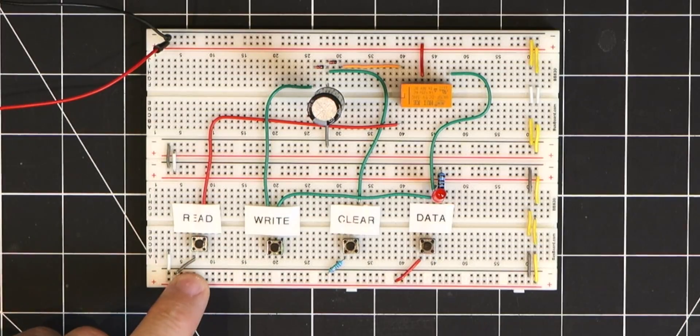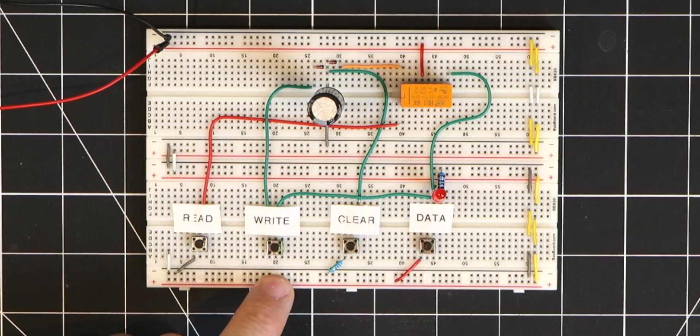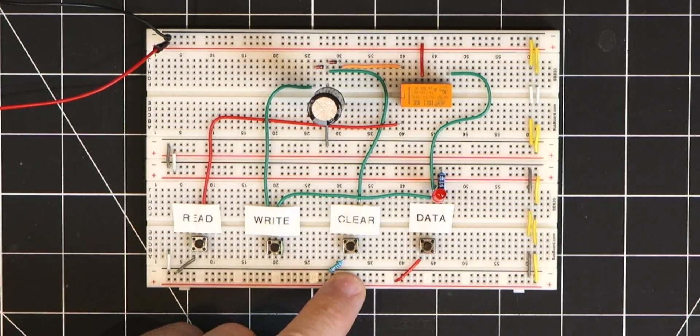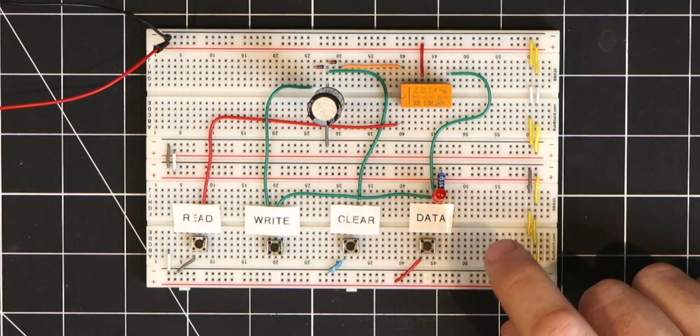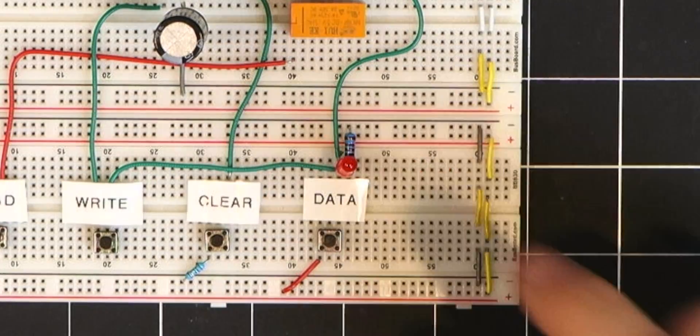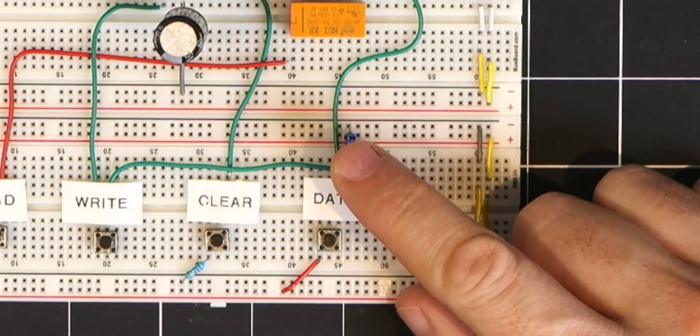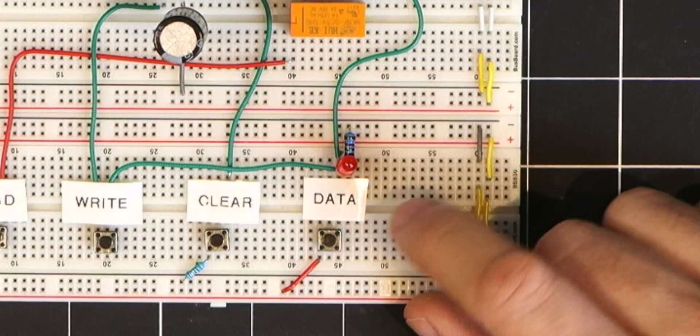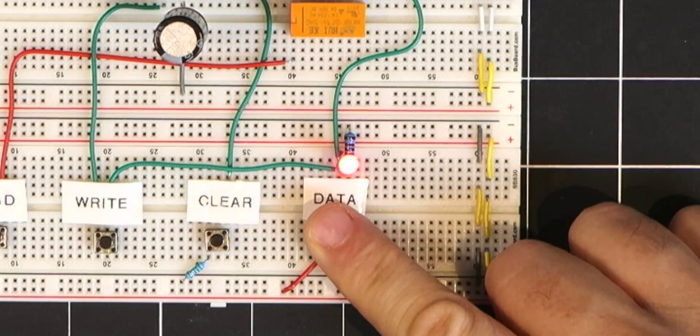The bottom board contains our controls for the read, write and clear functions of our one-bit memory, and on the far right is the massive one-bit data bus. And as usual when the LED is not lit it represents a zero and if it's on it represents a one.